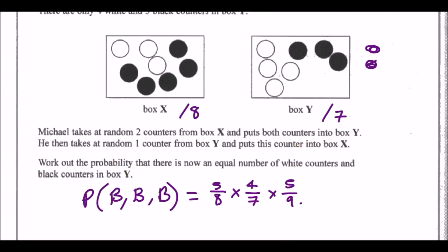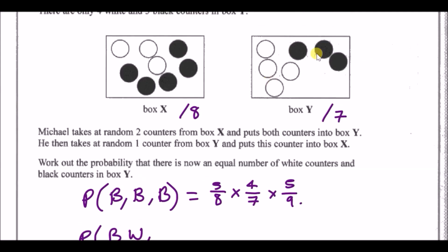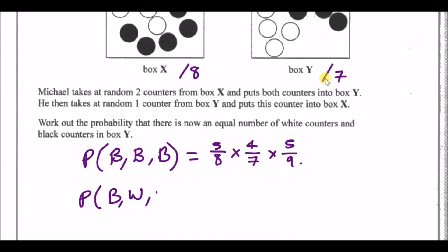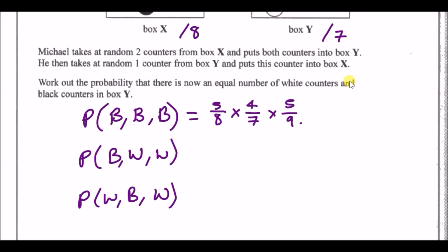Another scenario: take one black and one white from box X, giving box Y five whites and four blacks, then take a white back — leaving four and four again. You can also take the white first then the black; these two orderings give the same probability so you work one out and account for both.